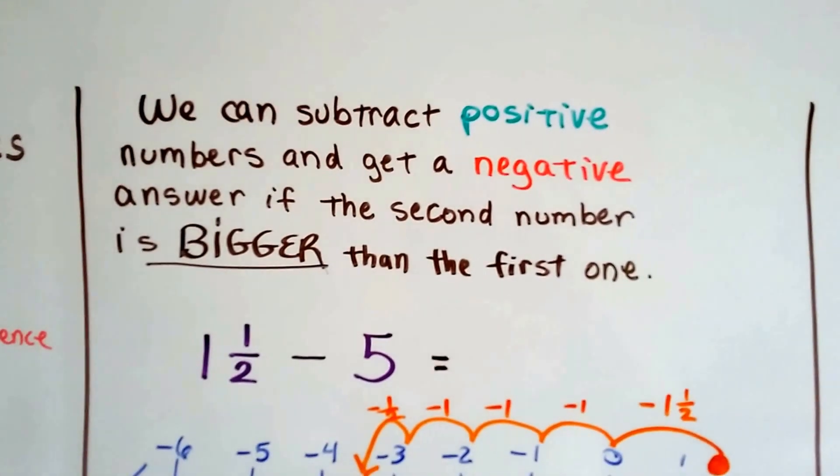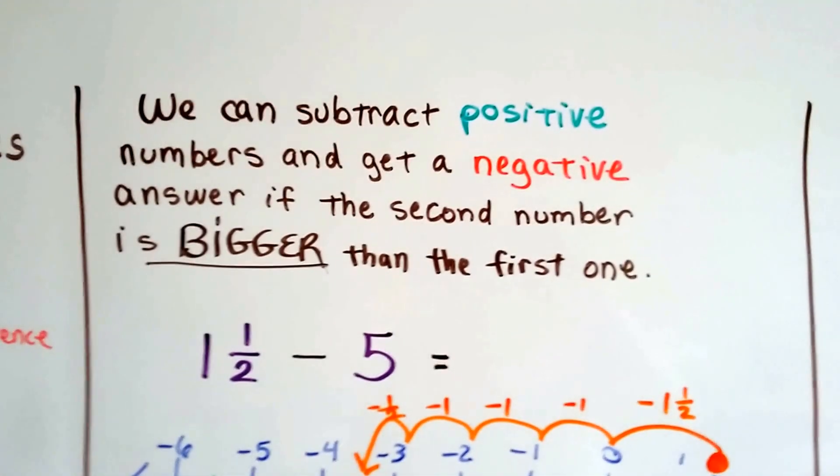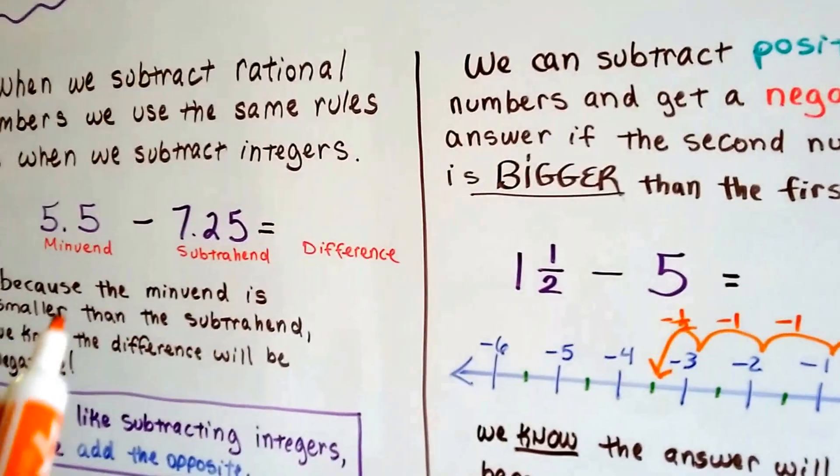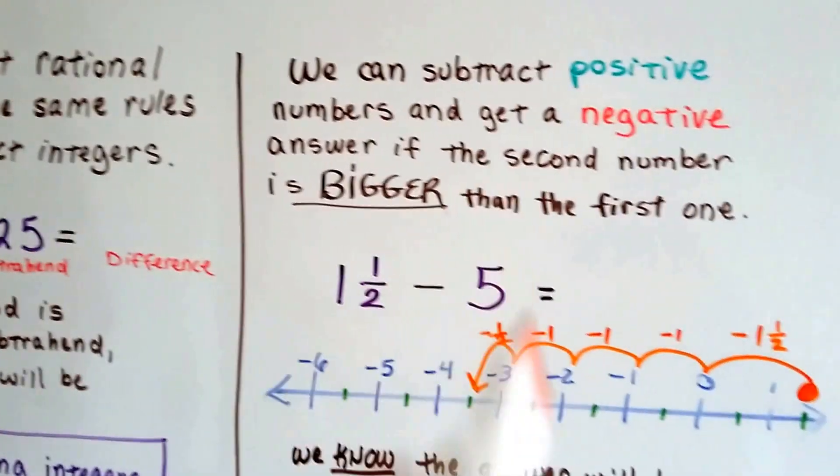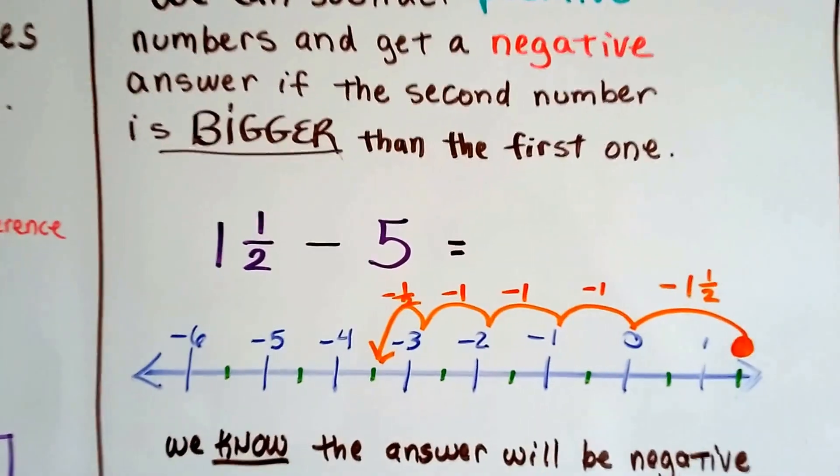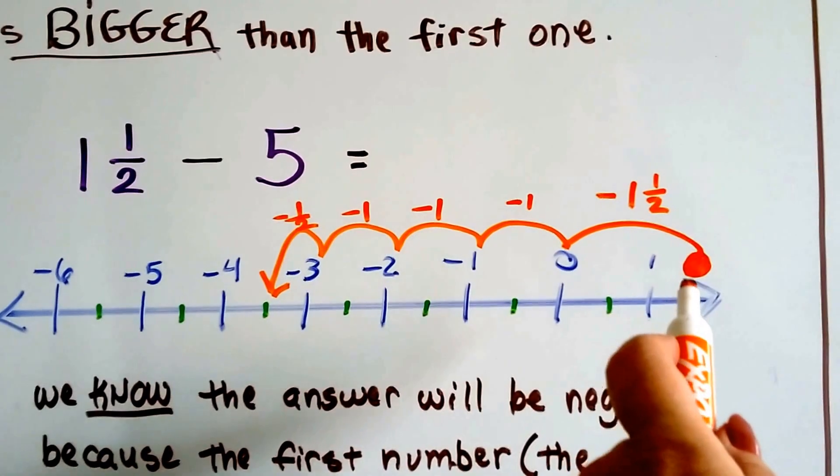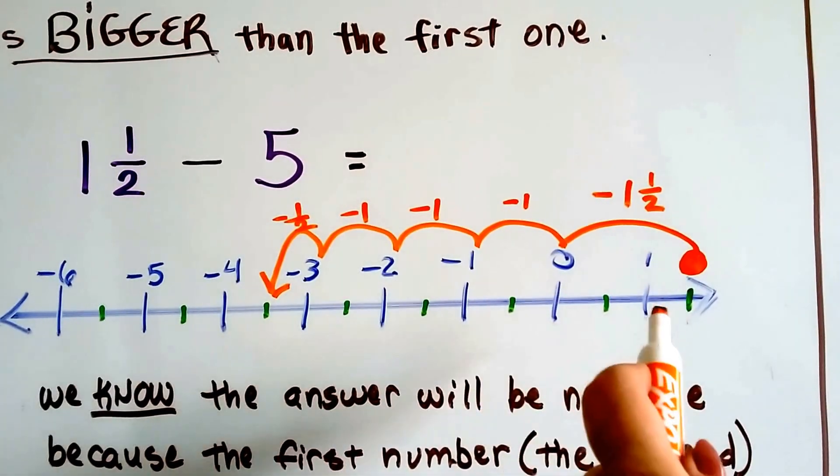We can subtract positive numbers and get a negative answer if the second number is bigger than the first one, if the minuend in the first one is smaller. So if we have 1.5 and we want to subtract 5, we start at the 1.5 on the number line, which is right here. Here's 0. Here's 1.5.